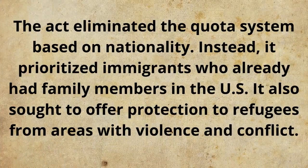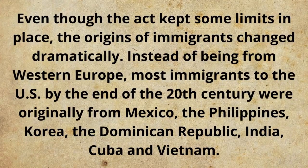The Act eliminated the quota system based on nationality. Instead, it prioritized immigrants who already had family members in the US. It also sought to offer protection to refugees from areas with violence and conflict. Even though the Act kept some limits in place, the origins of immigrants changed dramatically. Instead of being from Western Europe, most immigrants to the US by the end of the 20th century were originally from Mexico, the Philippines, Korea, the Dominican Republic, India, Cuba, and Vietnam.